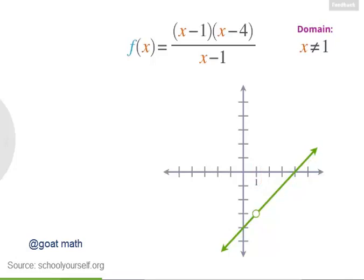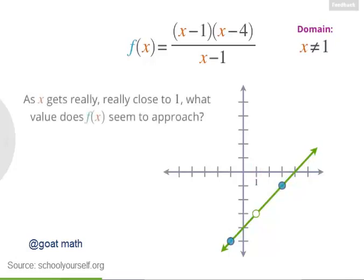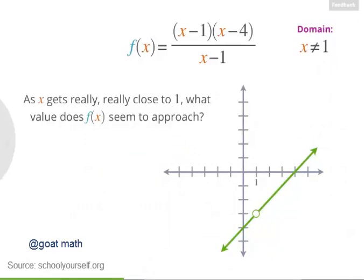We can't put the number 1 into this function, but let's look at inputs very close to 1. As x gets really, really close to 1, what value does this function seem to be approaching? f of x seems to be approaching negative 3. We'll be using narrow tubes to prove that f of x really is approaching negative 3 and not some other value.